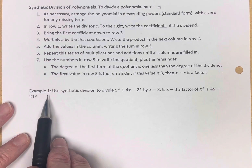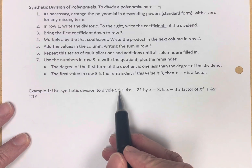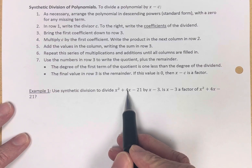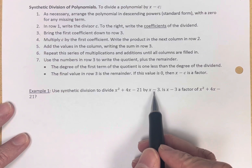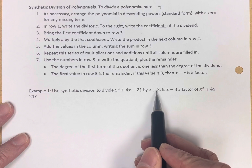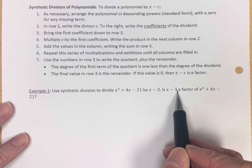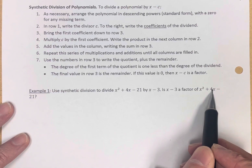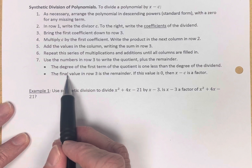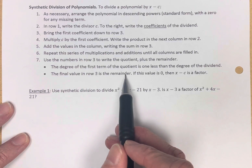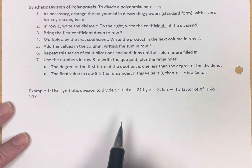Example one: use synthetic division to divide. This is a second-degree polynomial, x squared plus 4x minus 21, divided by the linear divisor x minus 3. Then we want to ask the question: is x minus 3 a factor of x squared plus 4x minus 21? Remember, if the final value in row three is zero, then it's a factor.